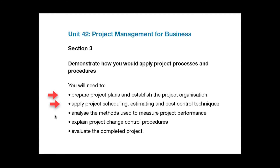Following on from the previous point, you need to explain what methods you would use to monitor progress, such as CPA, project status reports, budget reports, and change management reports. A brief description of what change control is and why it is necessary to have procedures for this is required in this section of the assignment. It would also help to show an example of such a procedure as applied to the project that you have selected.